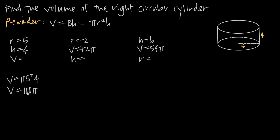So volume is equal to 100 pi. We'll leave our answer in terms of pi, but if you're asked for a decimal approximation, plug in 3.14 for pi, or use 22 sevenths for a fractional approximation. We'll leave it exact: volume is 100 pi.